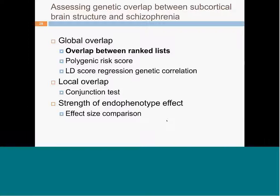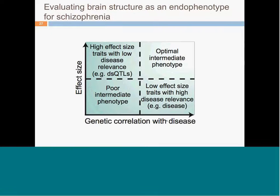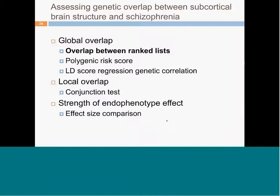We want to assess the genetic overlap between subcortical brain structure and schizophrenia. We can do this at multiple levels: at a global level to assess genome-wide overlap between genetic variants creating risk for brain structure and those creating risk for psychiatric illness; at a local level to examine individual SNPs creating risk for both brain structure changes and psychiatric illness; and by evaluating effect sizes — do genetic variants affecting brain structure have higher effect sizes than those affecting risk for disease?